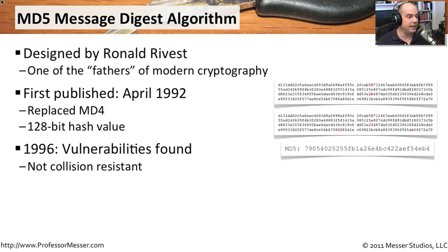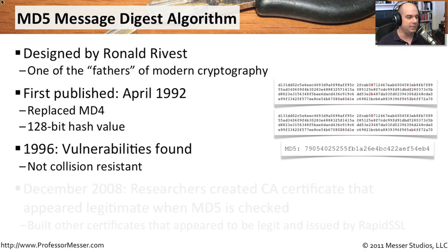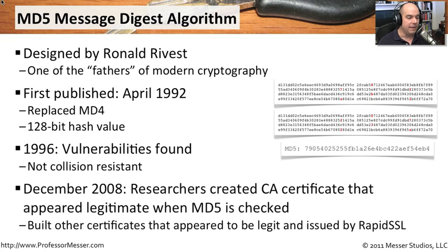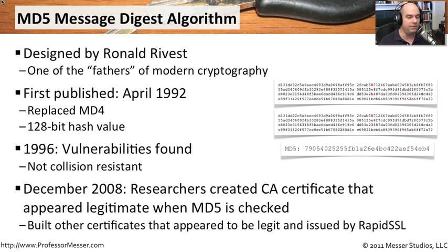When they found these in 1996, it was a pretty bad set of vulnerabilities and they realized this particular algorithm is not very resistant to these types of collisions. In December of 2008, researchers created a certificate authority certificate that looked absolutely legitimate when you did an MD5 hash against it.